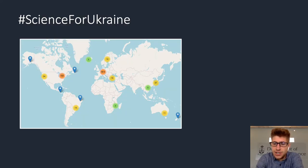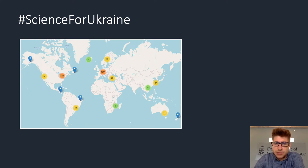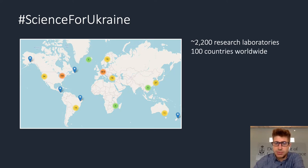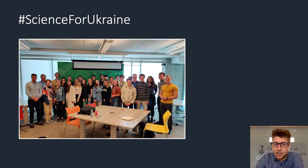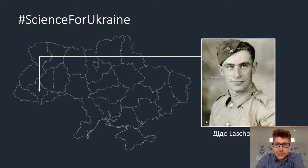I just want to mention Science for Ukraine, which is an initiative that I helped develop to provide support to Ukrainian students and researchers affected by the Russian invasion. We've been able to register more than 2,200 research labs from over 100 countries worldwide who are willing to fully fund Ukrainian scholars to come and do research. If you're interested, please check out science4ukraine.eu. This initiative also helped disseminate our University of Toronto summer program for Ukrainian students, hosted by the Department of Computer Science and the Vector Institute. Being Ukrainian-Canadian, I take these initiatives personally, so if you're interested in getting involved, I'd be happy to speak with you after my talk.